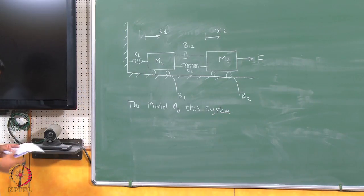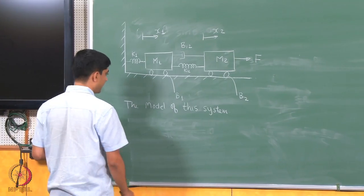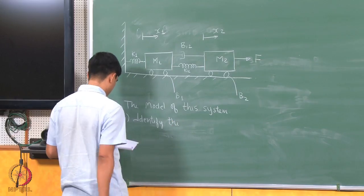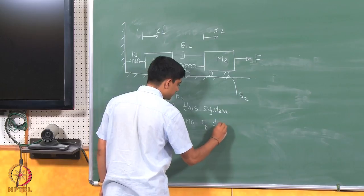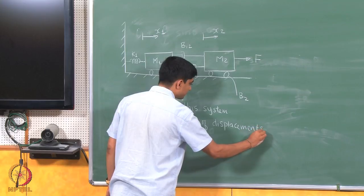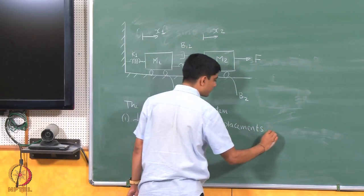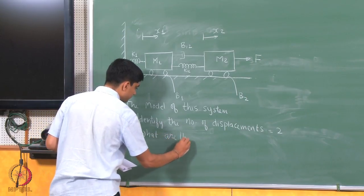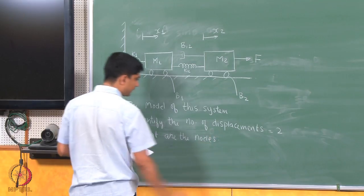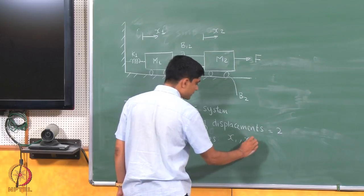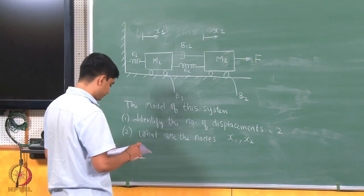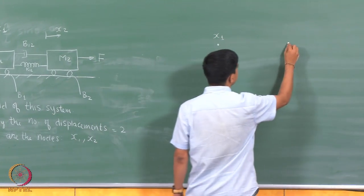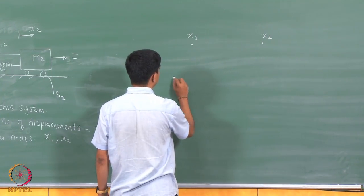There is an external force f being applied to m2, resulting in displacement x2, and the displacement of m1 I will denote as x1. My goal is to write the dynamical equations governing the system. Following the steps of modelling, the first thing to do is identify the number of displacements — in this case x1 and x2. I choose x1 and x2 as my nodes together with a reference node.